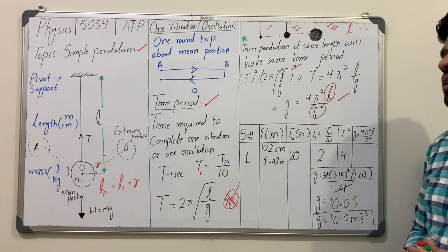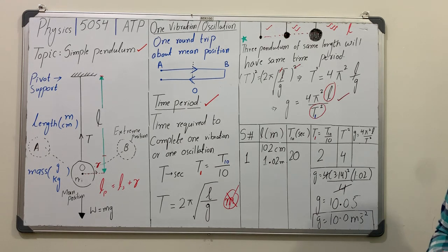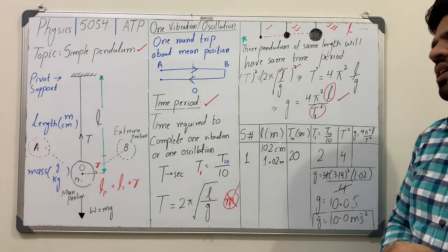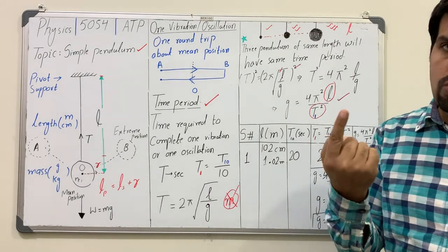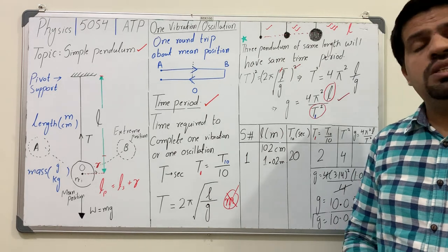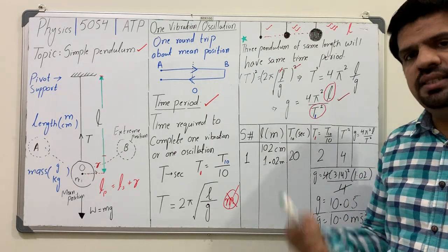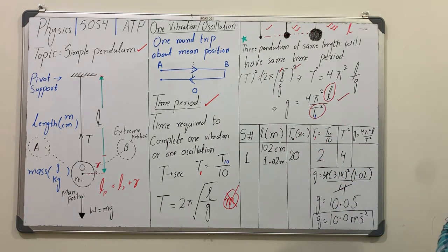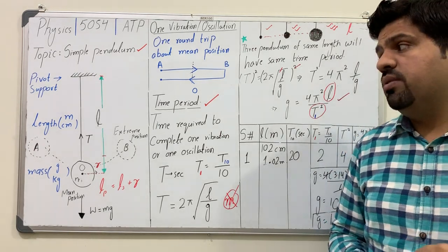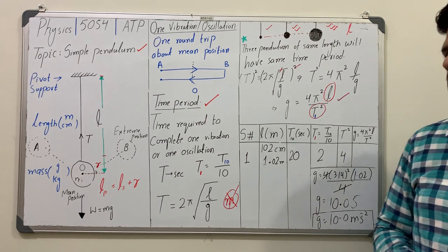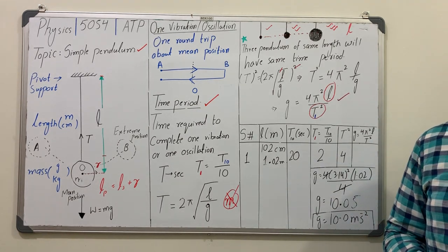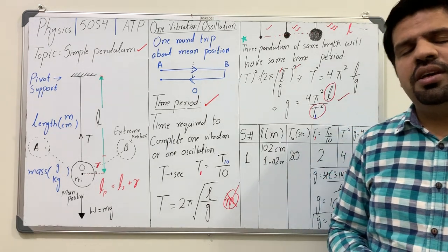There is another investigation we will discuss: how to make a simple pendulum whose time period is exactly one second — so that one vibration equals one second. In the next class, I will discuss that investigation along with its graphical representation. Until then, revise this at home, note everything in your notebook, build your resource pack, and maintain a question bank. For any confusion, ask in the comment box, WhatsApp, or any forum where I am connected with you. Thank you, have a nice day.